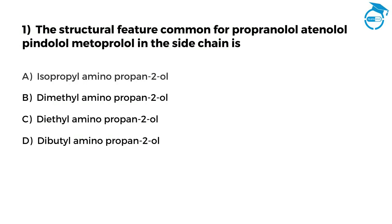The first question is: The structural feature common for propranolol, atenolol, pindolol, metoprolol in the side chain is: Option A, isopropylaminopropane 2-ol. Option B, dimethylaminopropane 2-ol. Option C, diethylaminopropane 2-ol. Option D, dibutylaminopropane 2-ol.